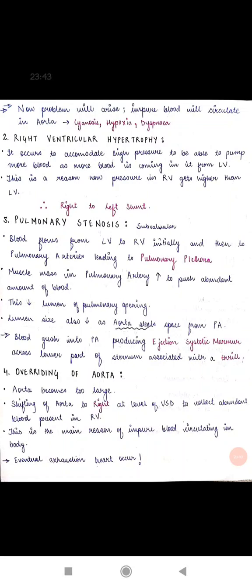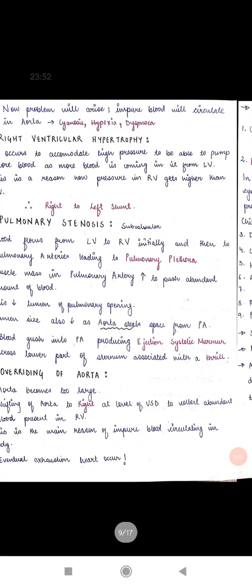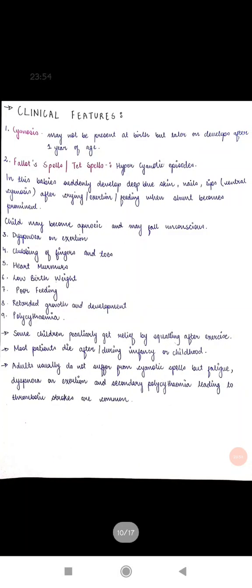Regarding overriding of the aorta: the aorta becomes enlarged and shifts to the right at the level of the ventricular septal defect to collect the abundant blood in the right ventricle. Blood flows directly from the right ventricle into the aorta — this is the main reason why impure, deoxygenated blood circulates in the systemic circulation. Eventually, as this condition worsens, exhaustion of the heart will occur as it can no longer meet the body's demands.